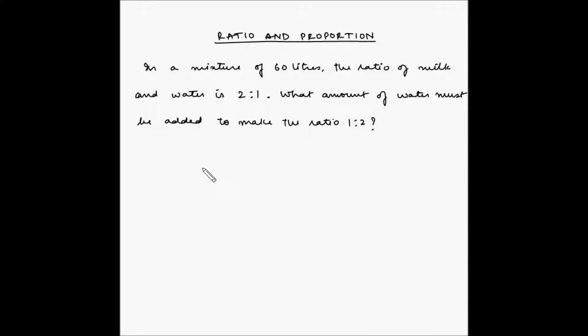In a mixture of 60 liters, the ratio of milk and water is 2 is to 1. What amount of water must be added to make the ratio 1 is to 2?